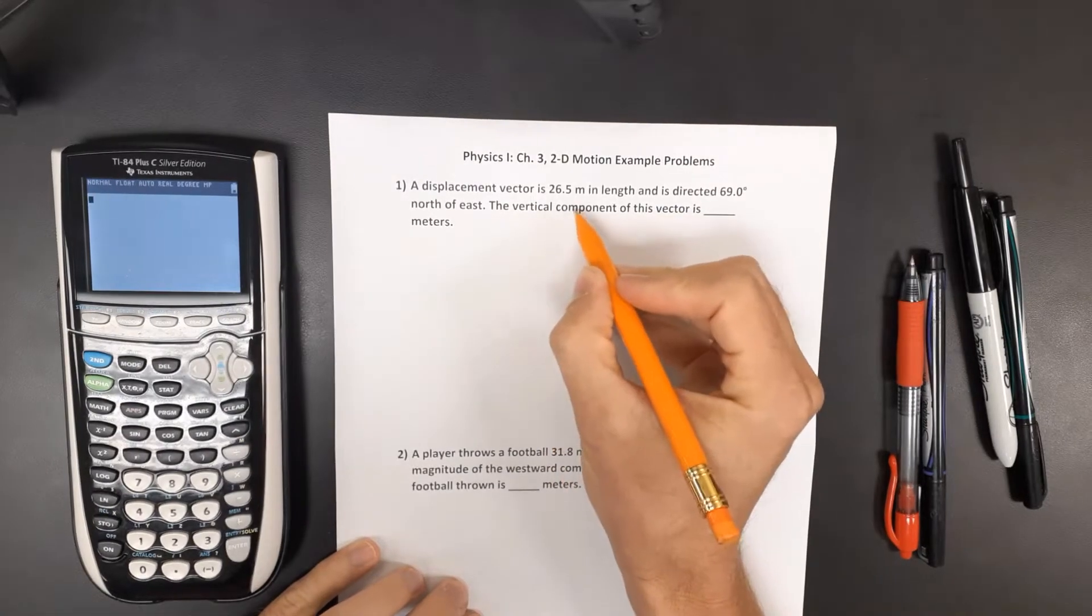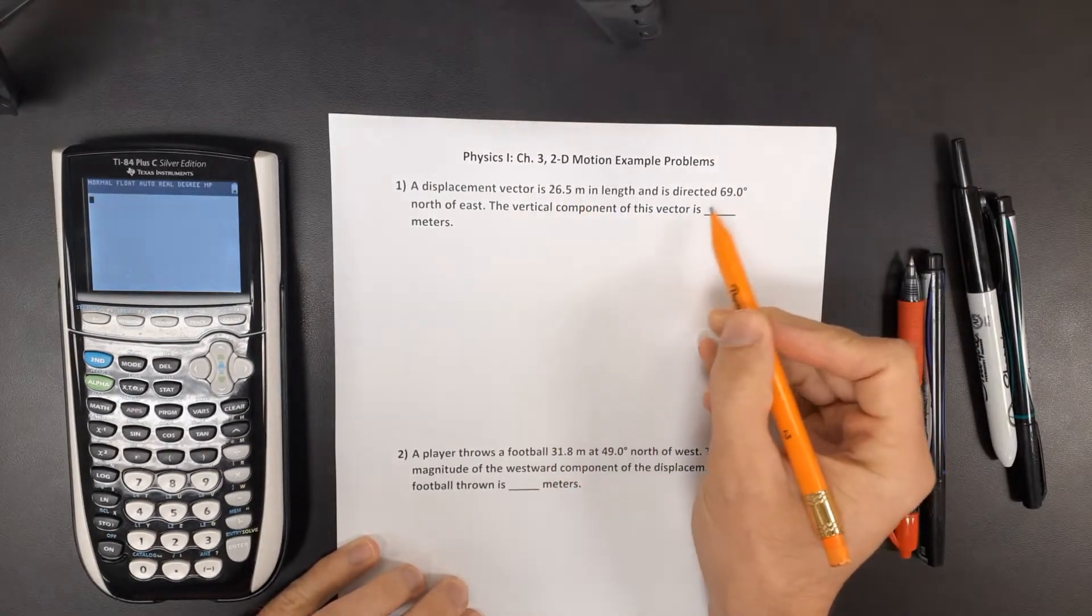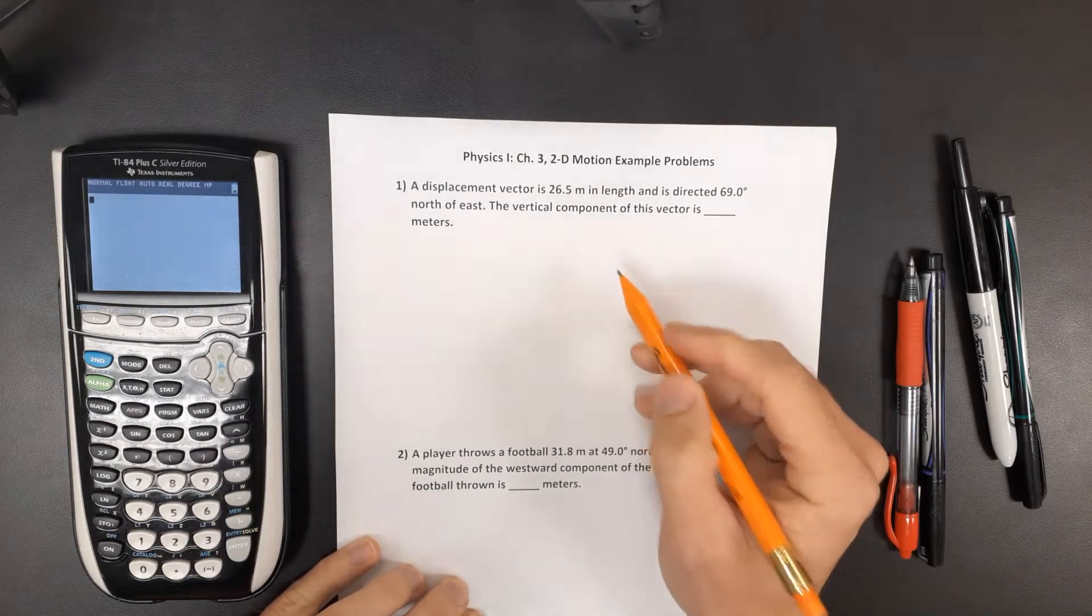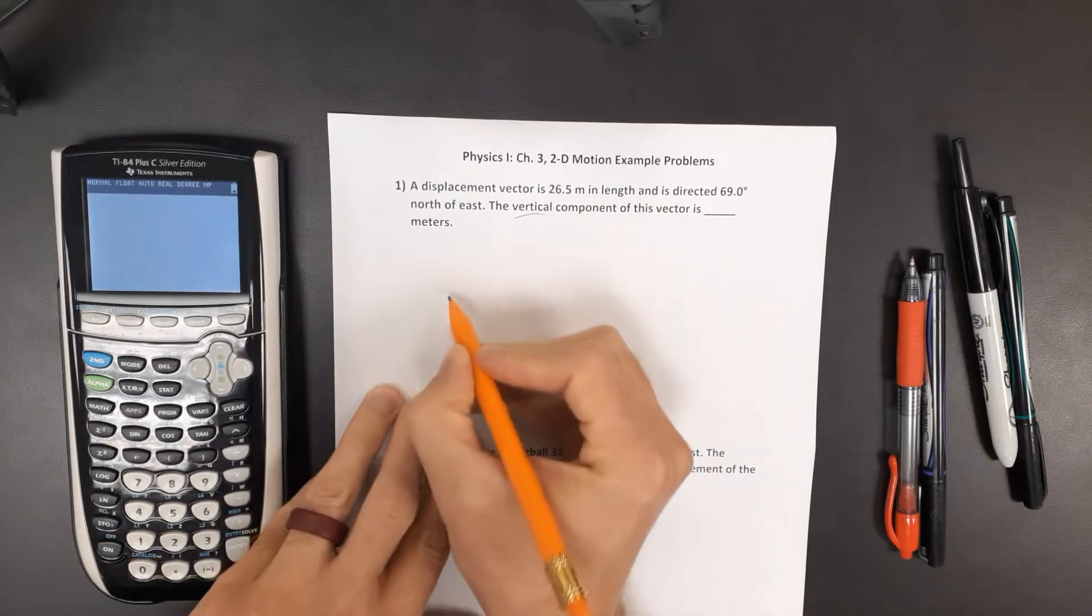In this problem we have a vector with a length of 26.5 meters and a direction of 69 degrees north of east. What is the vertical component for this vector?